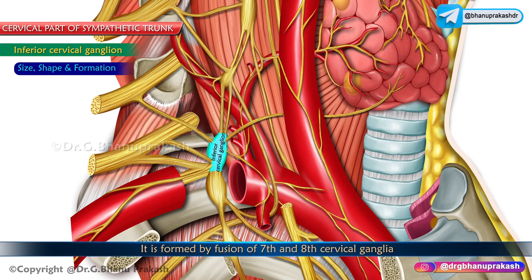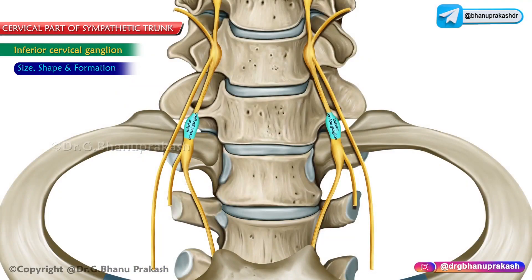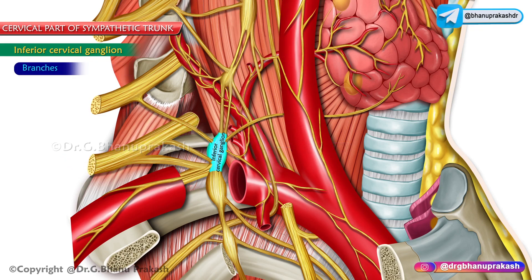The inferior cervical ganglion is formed by the fusion of the seventh and eighth cervical ganglia. It is often fused with the first thoracic ganglion, in which case it is known as the cervicothoracic or stellate ganglion. It is situated between the transverse process of C7 and the neck of the first rib, behind the vertebral artery and in front of the C8 spinal nerve ramus.